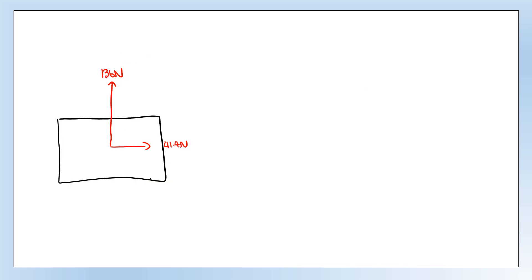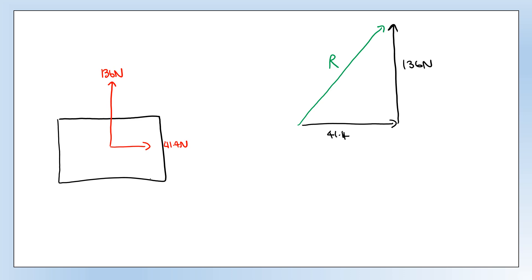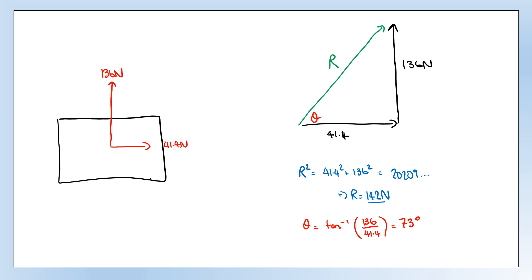We can use trigonometry to find the angle. In the scale diagram the angle was 17 degrees, and here it comes out as 73 degrees - they add to 90, so that checks out. This resolving technique is how it's done at A-level or pre-U physics. Scale diagrams get fiddly and annoying the more vectors you're trying to add together, so resolving becomes more practical with more complex problems.